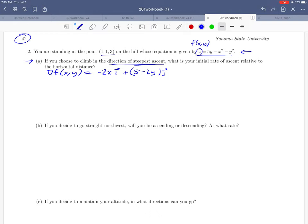Okay and remember our point of interest is happening when x and y are both one. So that's where we're interested in finding the value of the gradient. Okay so let's calculate the gradient at 1, 1. Substitute in 1 and 1 for x and y we're going to get negative 2i. And let's see 5 minus 2 times 1 is 3j.